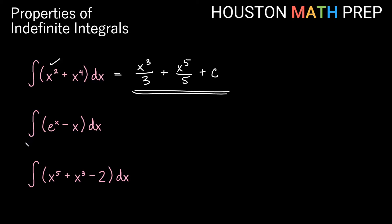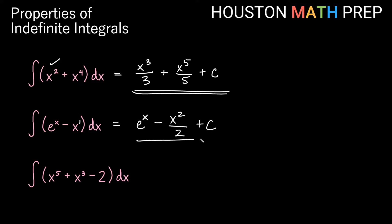Looking at our second example, the antiderivative of e to the x minus x with respect to x. The antiderivative of e to the x is e to the x itself. Then minus x, treated as x to the 1, is a power rule: the power goes up by 1 to x squared, divided by the new power gives over 2. So we get e to the x minus x squared over 2, plus our constant of integration.